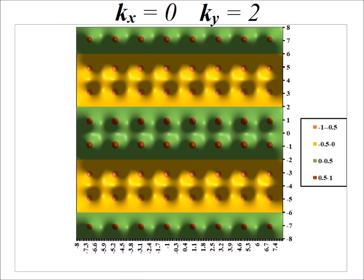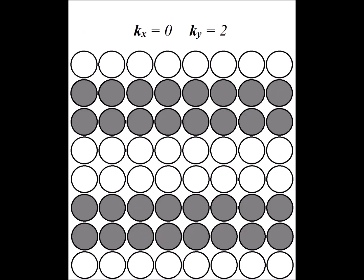Now switching to kx equal to 0 and ky equal to 2, we get a particular eigenfunction. The phase relationships for kx equal to 0 and ky equal to 2 look like the same pattern as kx equal to 2 and ky equal to 0, just rotated. As a result, those two states will have exactly the same energies — we say that they are degenerate.